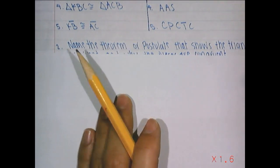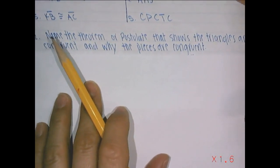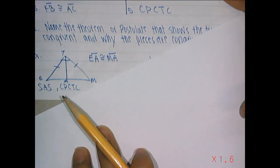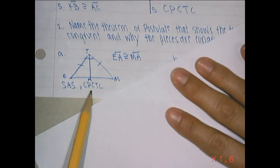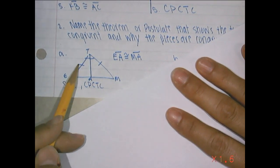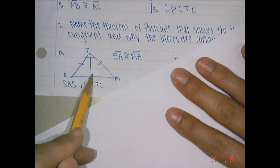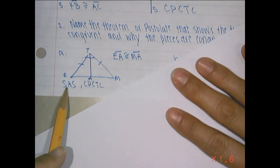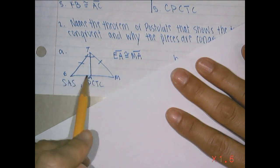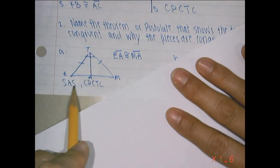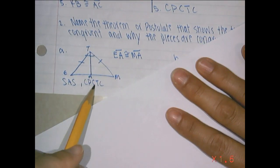Now let's look at another example — name the theorem or postulate that shows the triangles are congruent, and why the pieces are congruent. I said side, angle, side and CPCTC, but why? Well, this side is congruent, these angles are congruent, and they share the side, so that side would be congruent — side, angle, side. And EA is congruent to MA. Because the triangles are congruent, their various parts are congruent, so corresponding parts of congruent triangles are congruent.